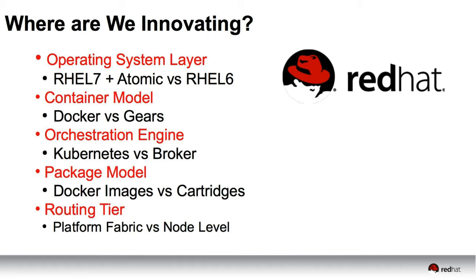The container model changes drastically — we move over to a Docker model from our gear model. This allows us to pick up more namespaces like the PID and the network, allowing us to do more real IP work and other features. Orchestration changes: we move from our Ruby broker with an ActiveMQ message bus and Mongo storage over to a Kubernetes backend. The packaging model changes — we're no longer adding personality or content into the gears with cartridges. We kind of merge the cartridge with the gear and come together under a Docker image. Platform routing changes as well — we're moving to a larger central fabric.